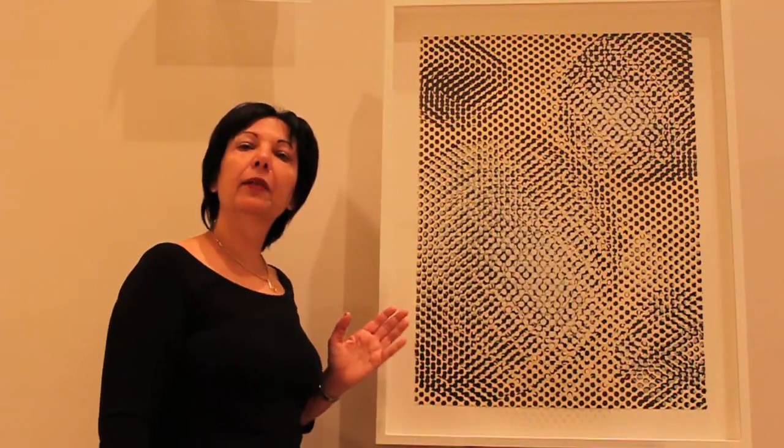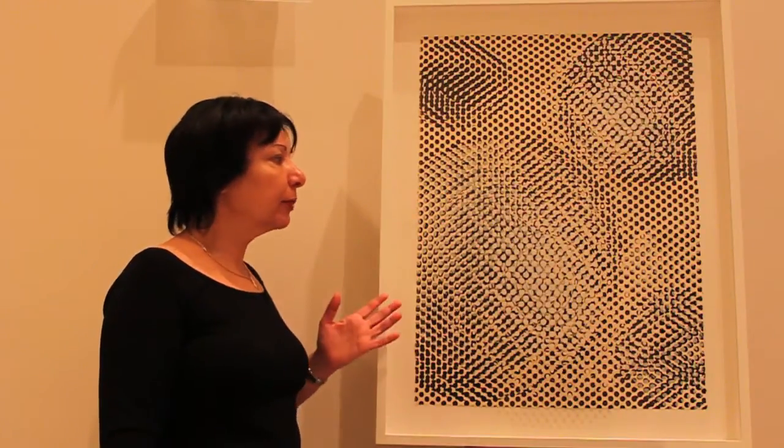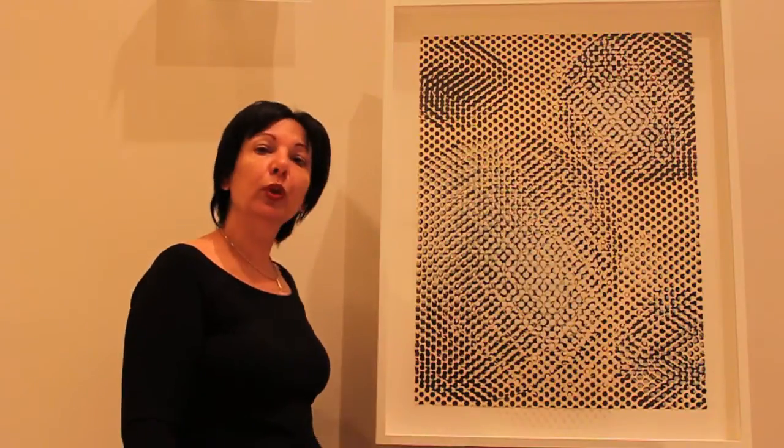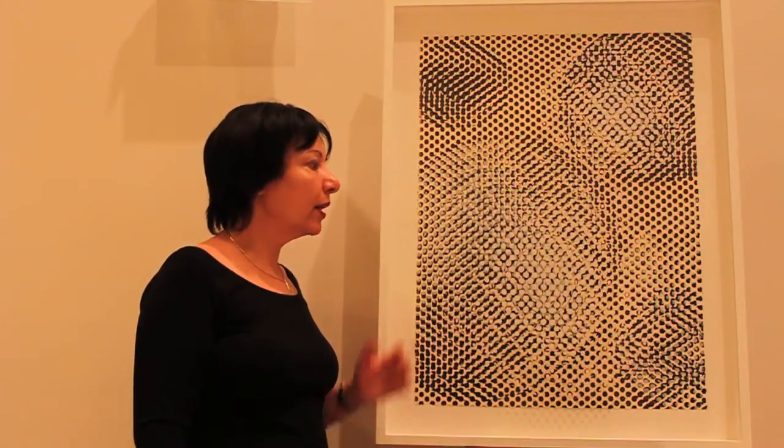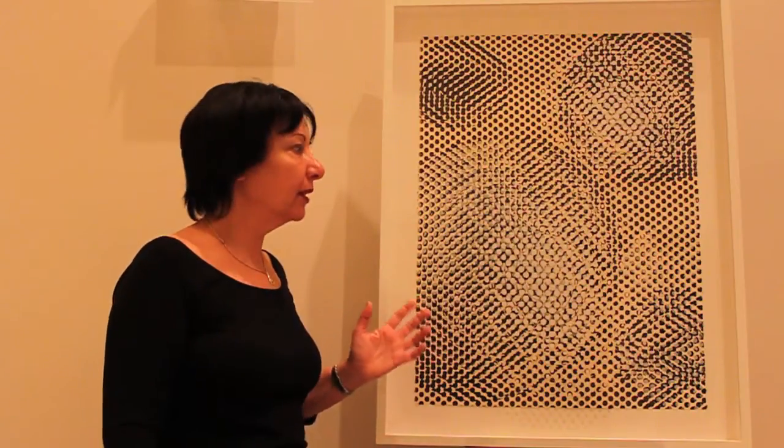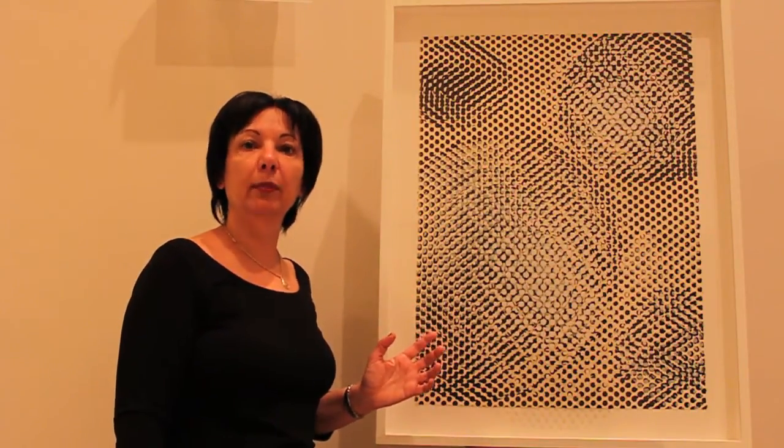This is a 3D Monoprint from the Quantum Dynamics series that I began in 2010. I start by printing over a paper and then I print over a plexiglass a different image. When I frame it, I make sure that there is a 2-inch distance between the plexiglass and the paper. This way, I create depth and movement that is not achievable in a 2D Monoprint.